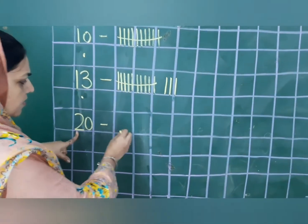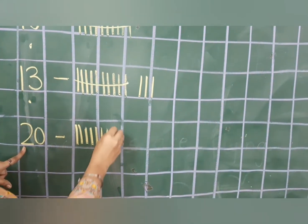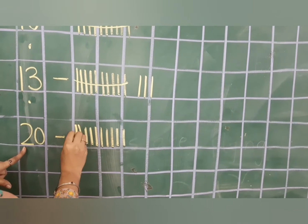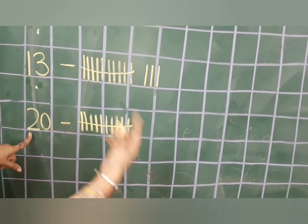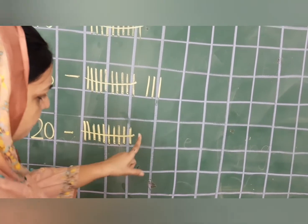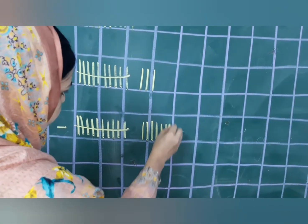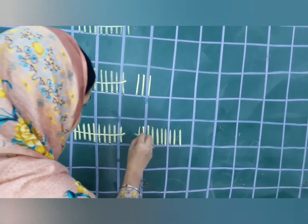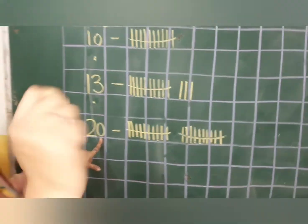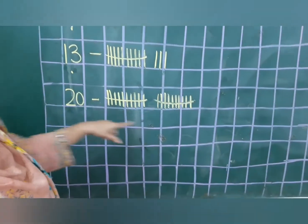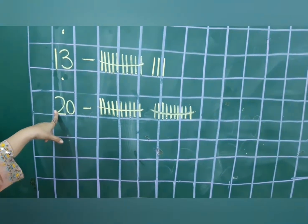What is there on tens place? Two. That means we will draw two bundles. This is one bundle, I will tie a rubber band. Now two — so I have to draw one more bundle, give one finger space and draw another bundle, again tie a rubber band. Now what is there on ones place? Nothing, zero. So we are not going to draw anything. Two bundles is equal to twenty.